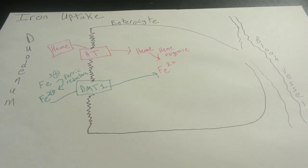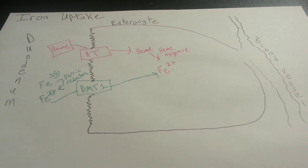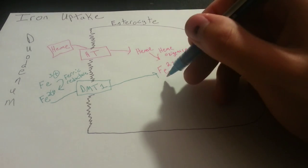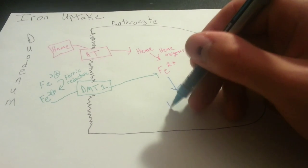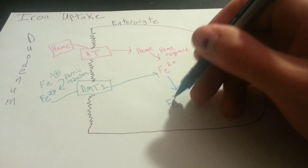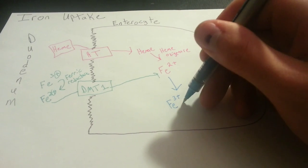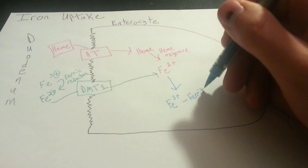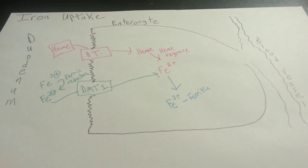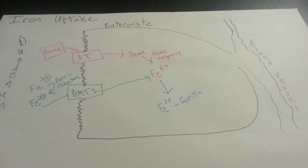Now, once we get to this step of just iron in its reduced form floating around an enterocyte, it has a few options. It can be stored by being bound to ferritin. And this will also oxidize it in the process. So you get Fe3+ combined with ferritin. And ferritin is the storage form of iron. And this is fine because if we're low on iron, we can reversibly get our iron back from ferritin.